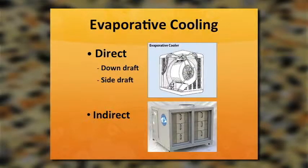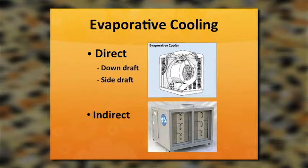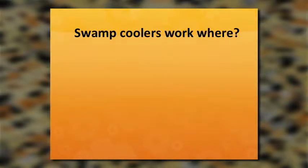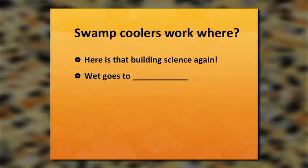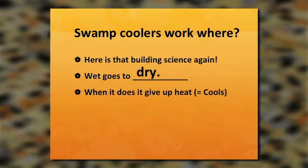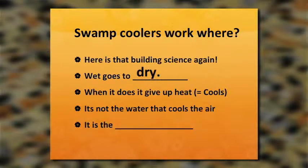This is an indirect swamp cooler — you'll find these on big college buildings and roofs, not like the regular direct ones. They do the cooling and run through ductwork, bringing moisture into the building. Swamp coolers work because when water evaporates, it gives up heat and cools. It is not the water that cools the air — it's the evaporation, the vapors. Hot goes to cold, and the warm air gives up its heat to the water vapor.